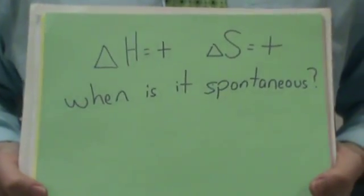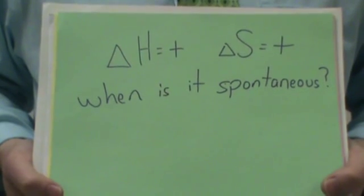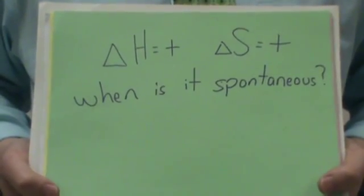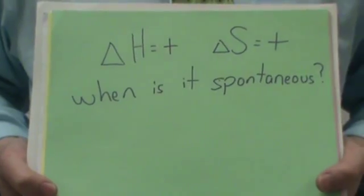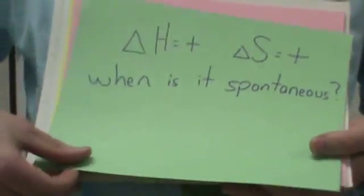When is this spontaneous? At higher temperatures, delta G would be negative.